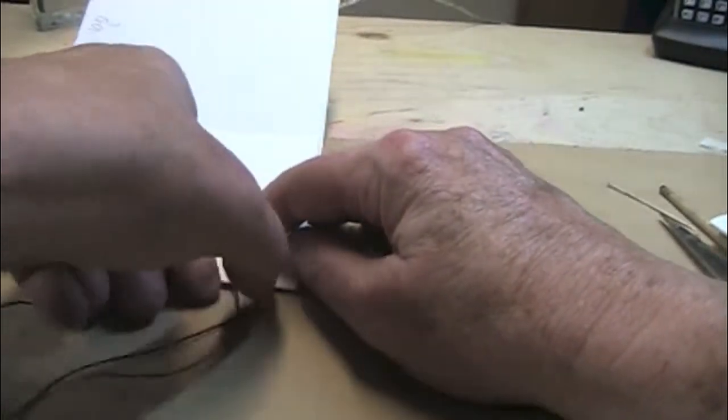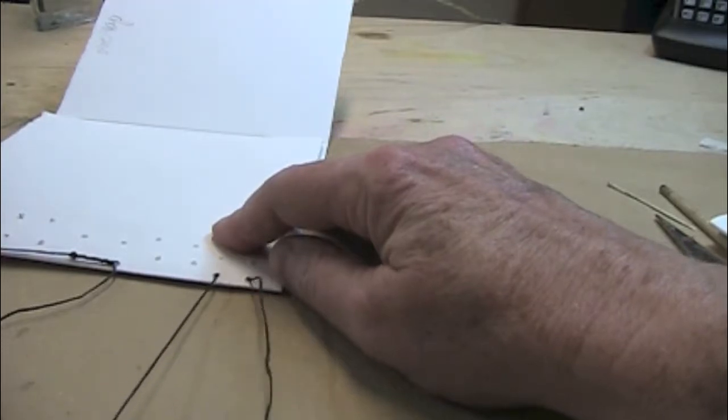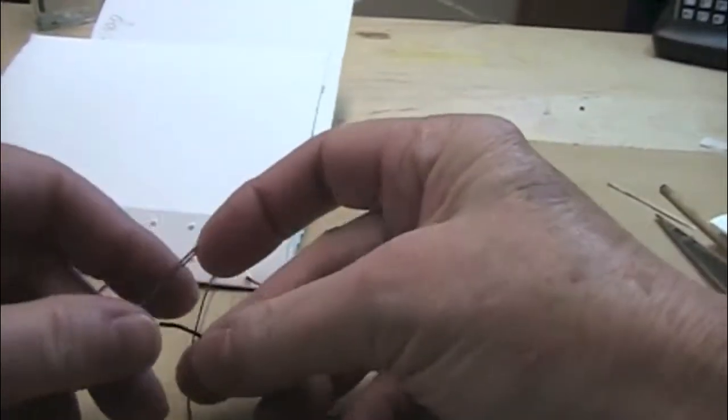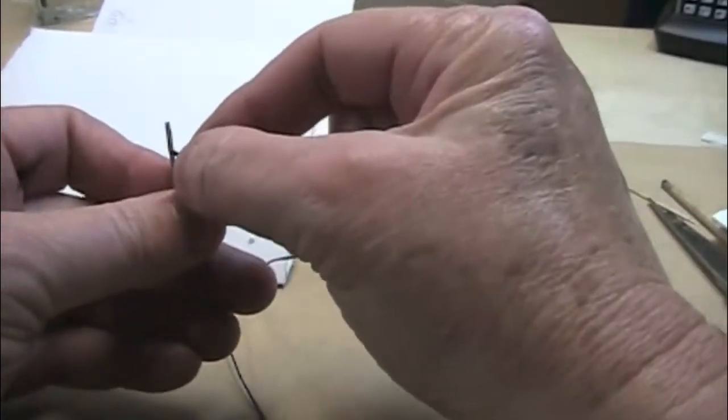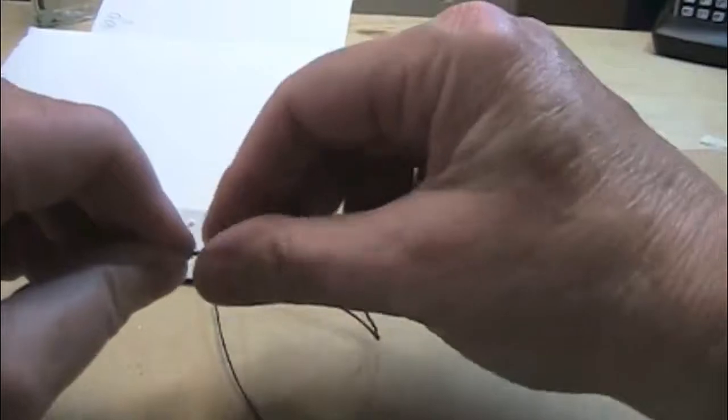This might seem like a pain to you but actually it makes the wrapping go a little bit easier. I'm just going to even out those two lines of thread, and I'm going to thread one needle leaving a short tail here.